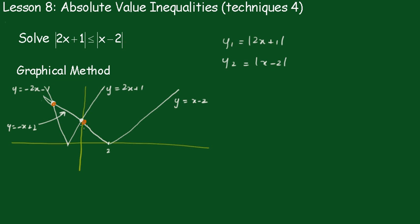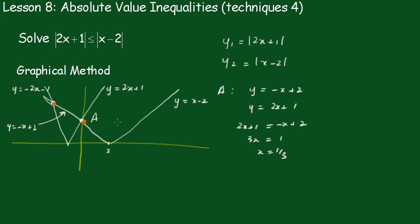We're going to take this point here first — we'll call that point A. For point A, we've got this branch here, which is y equals minus x plus 2, and the other one: y equals 2x plus 1 on this branch on this side. So 2x plus 1 equals minus x plus 2, so 3x equals 1, x equals one third. So it wasn't on this side — it was on here, at one third.